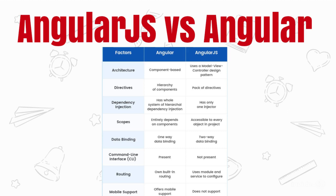In terms of architecture, Angular has a component-based architecture, whereas AngularJS uses the MVC — Model View Controller — design pattern. The model is for data management, the view is to display the output, and the controller is the mediator between the model and view: it receives input, converts it into commands, and sends it to the view. Angular uses a hierarchy of components instead.